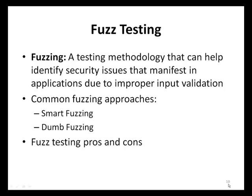The majority of application vulnerabilities exist today due to developers failing to validate inputs. Fuzzing is a testing methodology that can help identify security issues that manifest due to inputs not being properly validated, and it is a core testing technique in the SDL verification phase. There are several approaches to fuzz testing; however, the two most common are called smart fuzzing and dumb fuzzing.